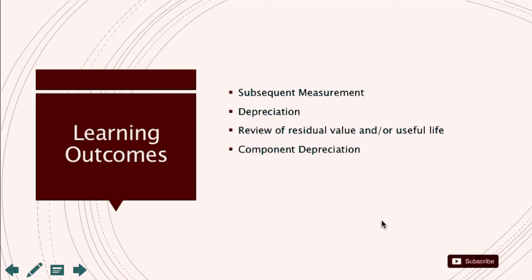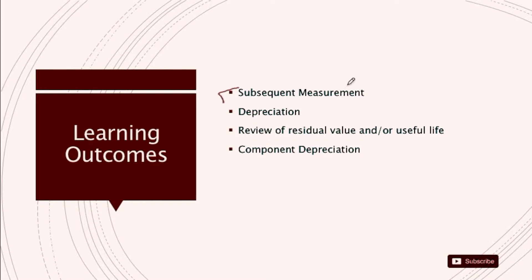After completing this session, you will have an understanding about the following four areas relating to property, plant and equipment. The first is subsequent measurement. We discussed about the initial measurement — how we can initially measure property, plant and equipment. Here, we will discuss about the subsequent measurement. The second part, we will have a discussion on the depreciation policy, because there is no separate section for depreciation — it is included within Section 17 of the IFRS for SMEs.